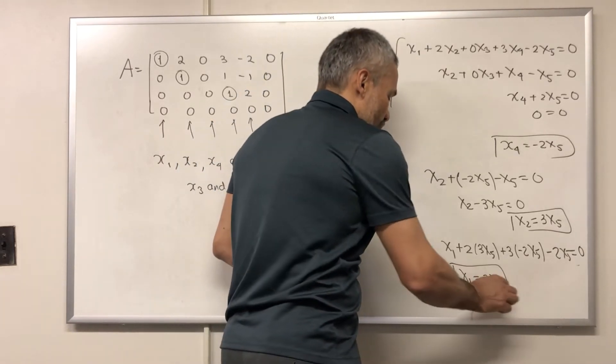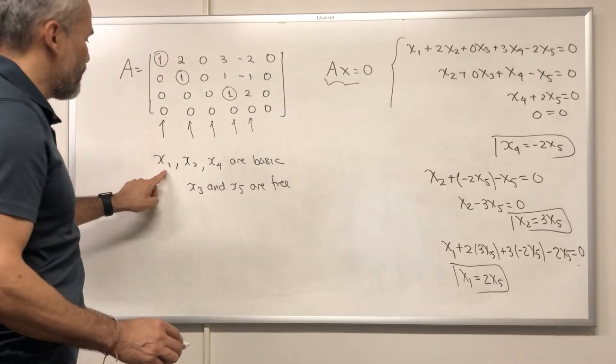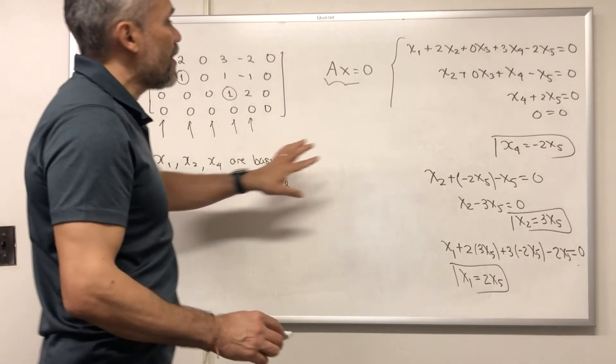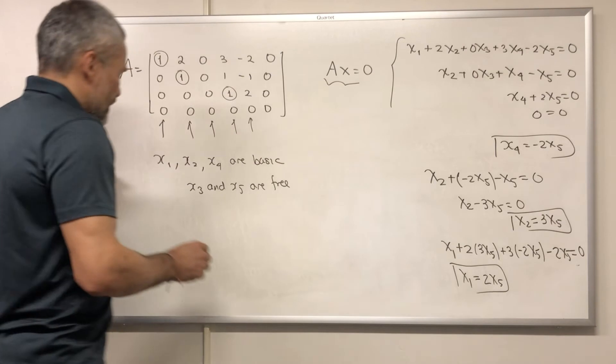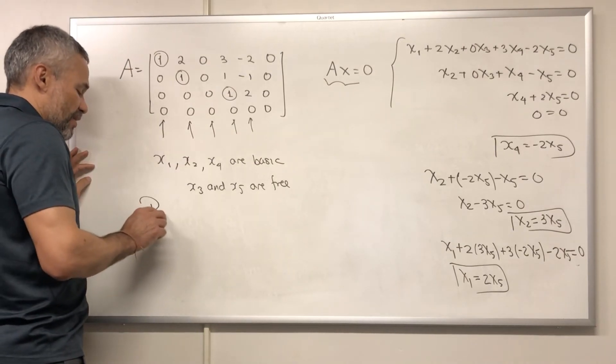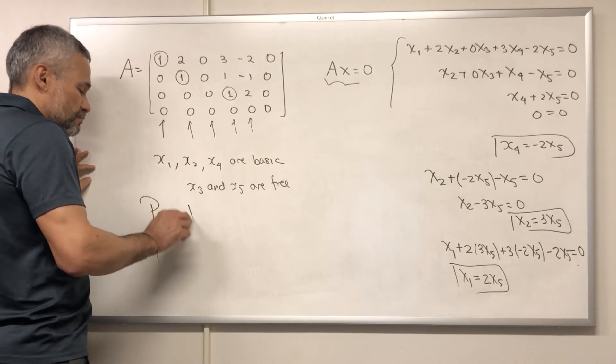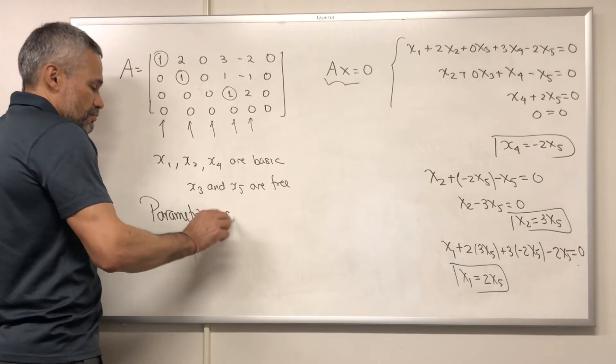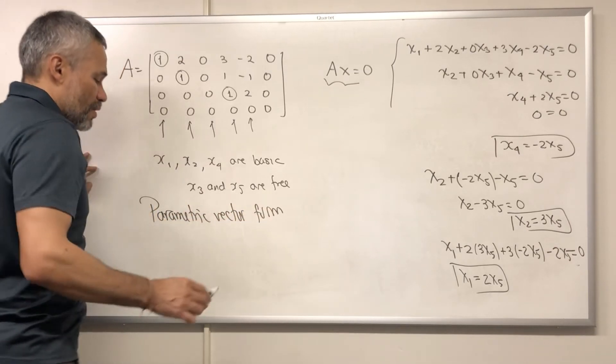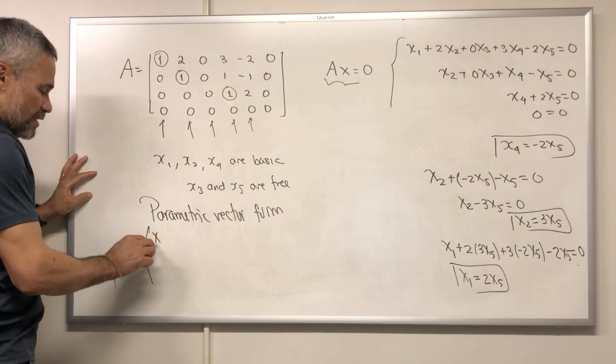We have written the basic variables in terms of the free. Now, in order to get the answer in parametric vector form, we write the solution like this.